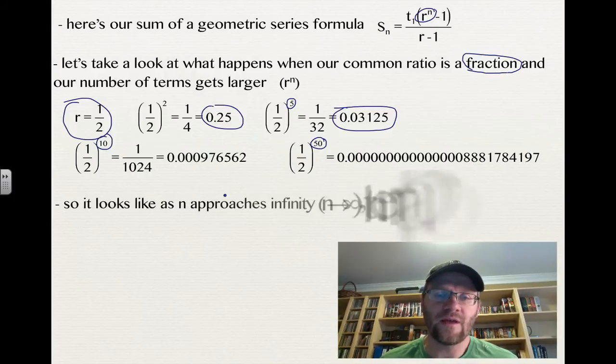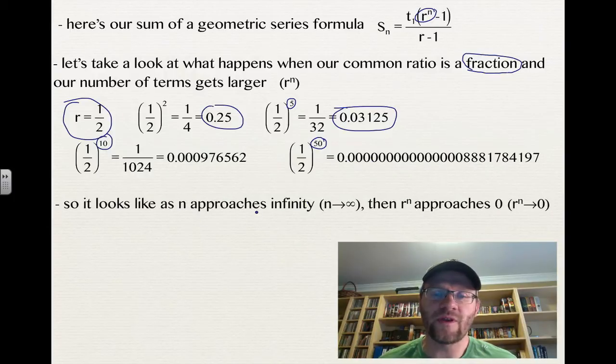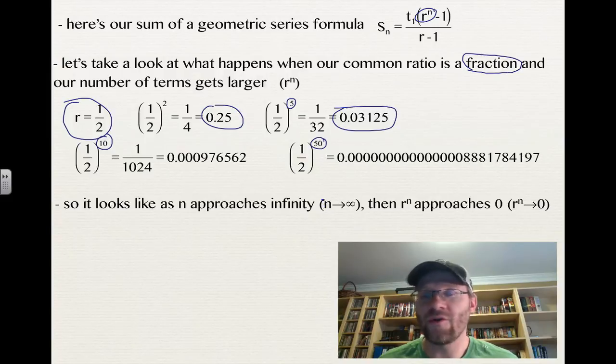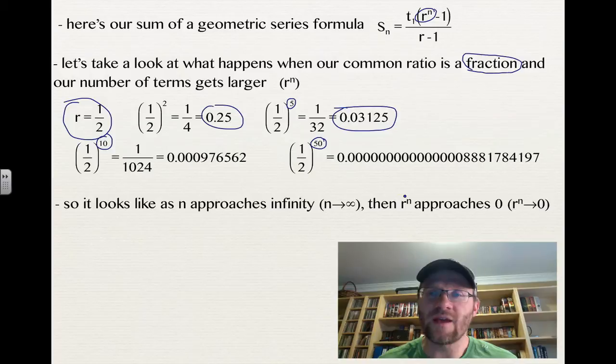So it looks like as n approaches infinity, as n gets really big, so that 50 could become 100 or 1,000, then r to the n is approaching 0. This is just how we would write that in math. If the n arrow infinity, that means that r to the n is approaching 0.